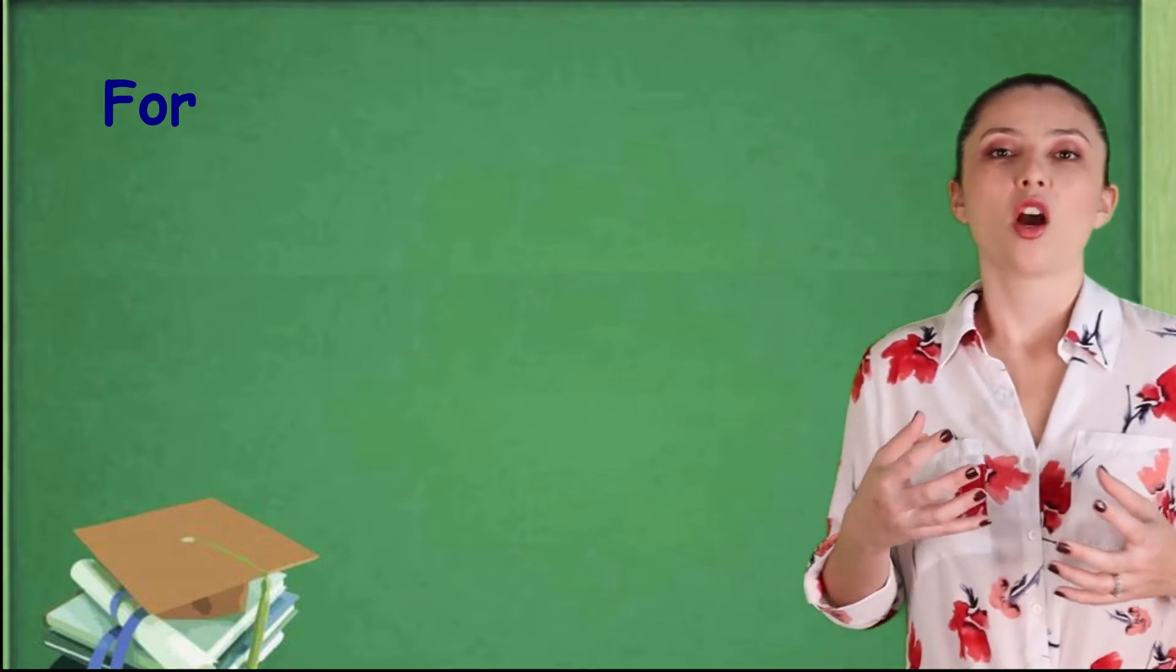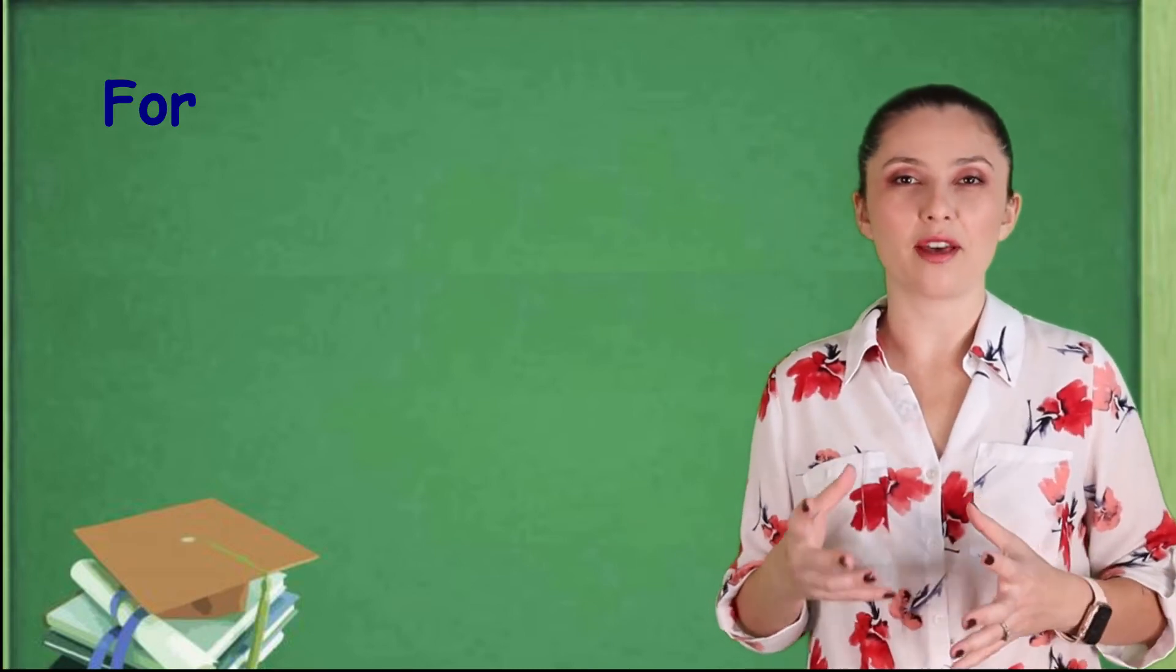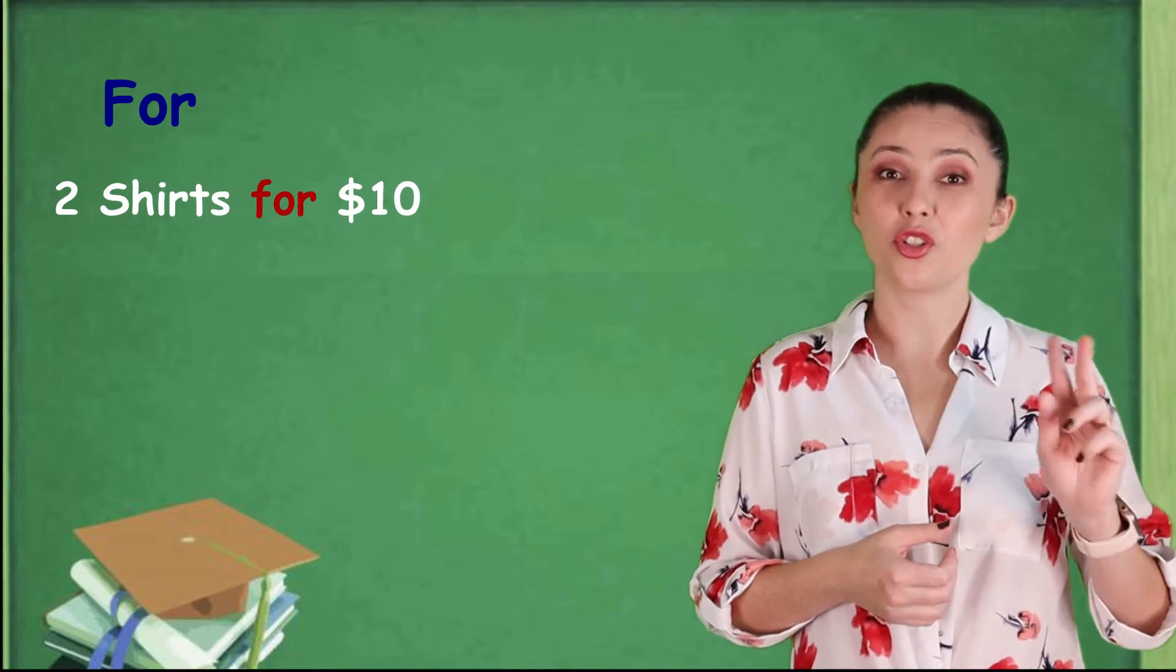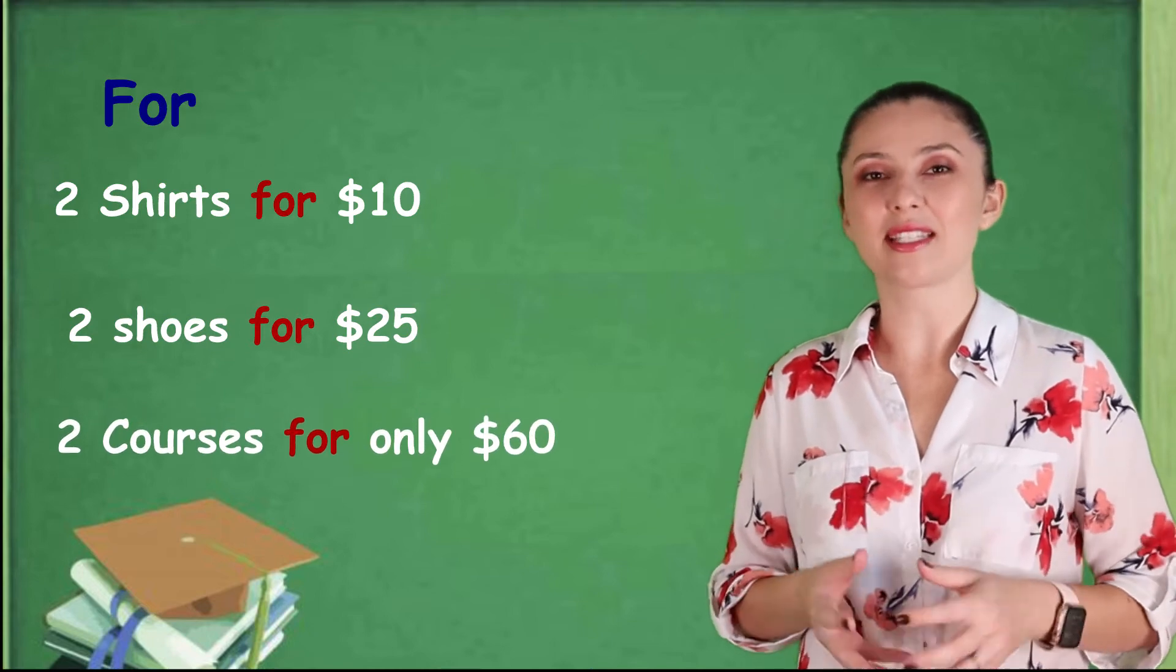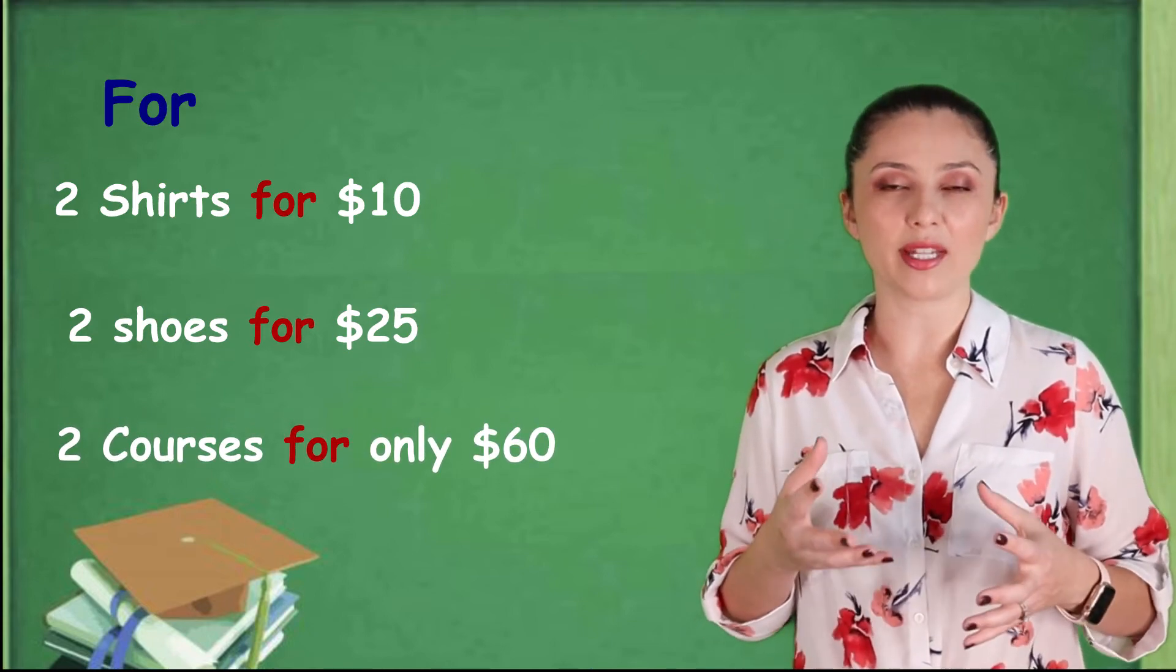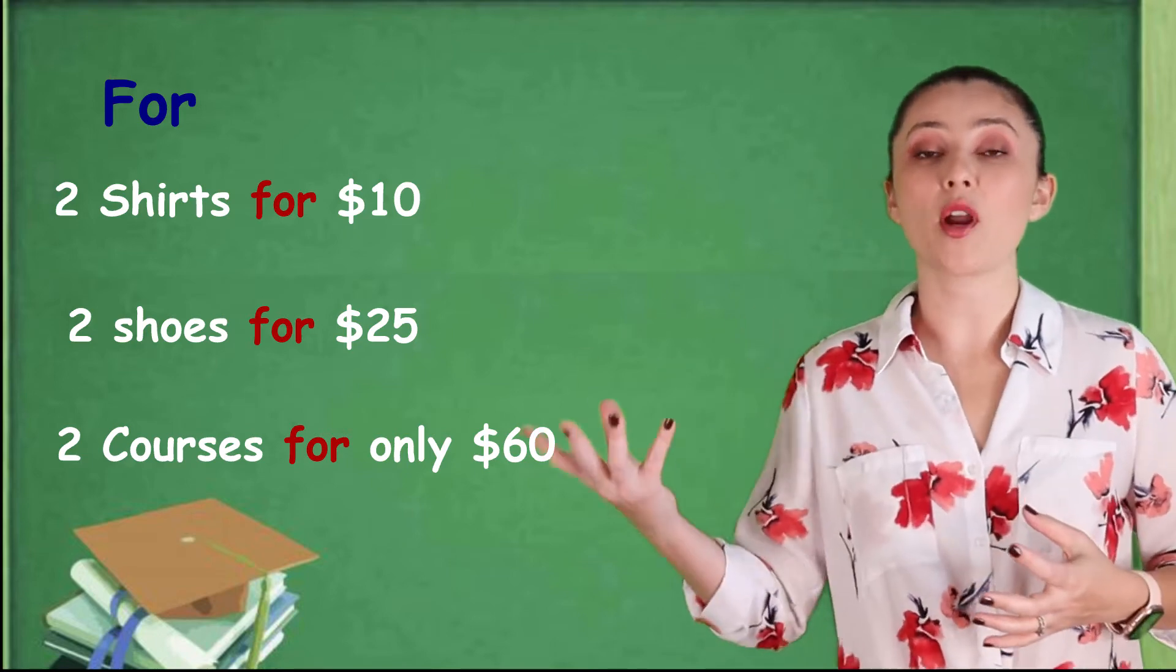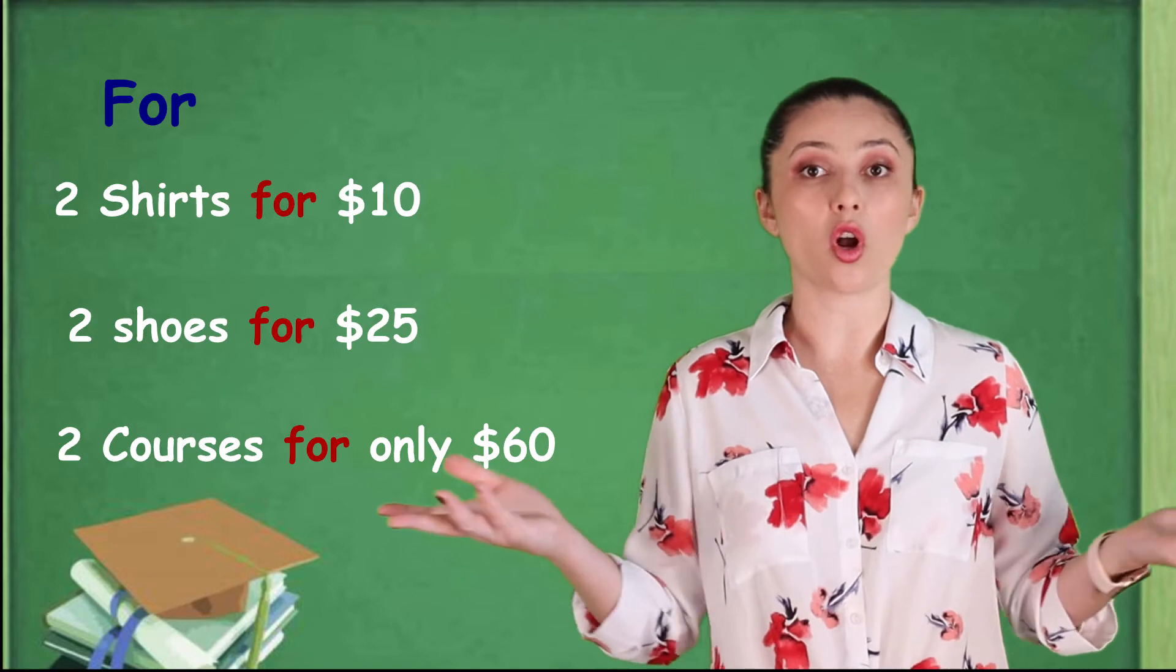Also, you can use the preposition for when you're talking about exchange, exchanging of something. Or, also, you can get two things for one price. A very cheap price. And you're going to see these sentences a lot in stores. Especially on Black Friday. So, two shirts for $10. Or, two shoes for $25. Two courses for only $60. So, here I'm talking about quantity. You get two, three or four. But then I say the price for them. So, you can get two shirts for only $10.